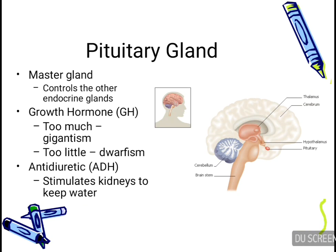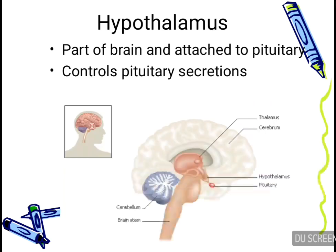Hypersecretion of growth hormone leads to gigantism, whereas hyposecretion leads to dwarfism. Antidiuretic hormone stimulates the kidneys to maintain water balance.